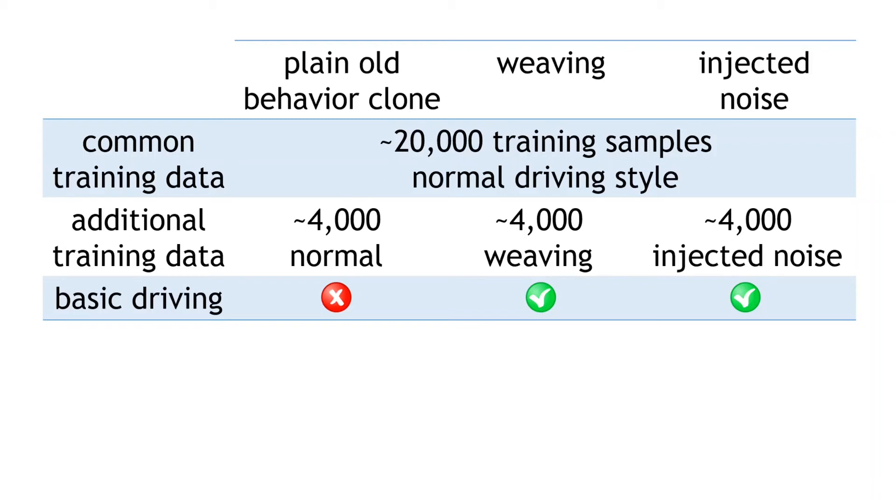Is the weaving or noise trained policy any better than the other? Or are they equally as good at driving around the track? Well, in order to compare, we need to come up with some metric for measuring goodness.